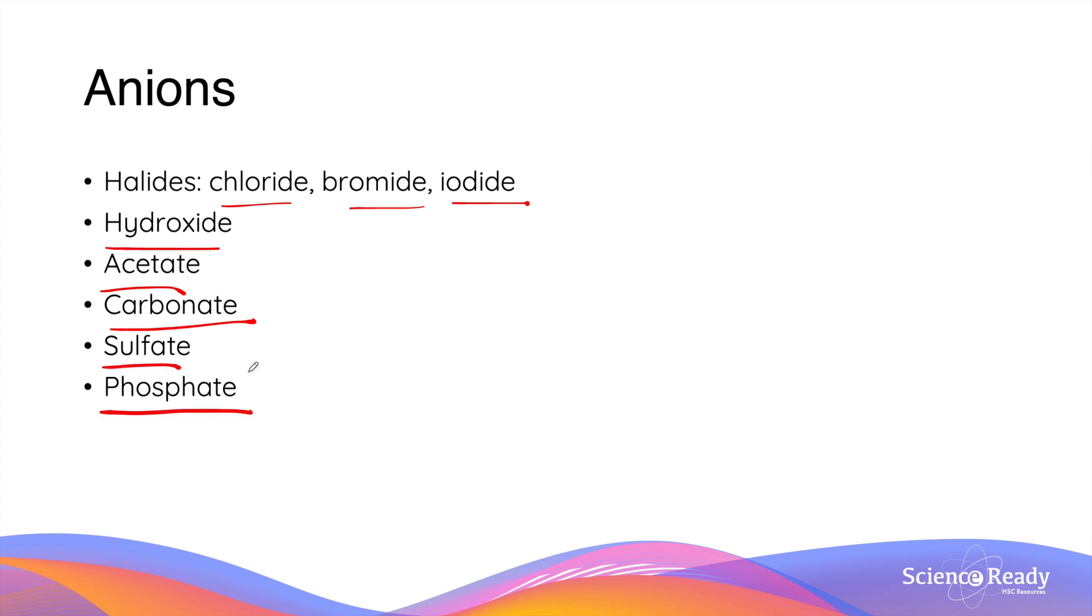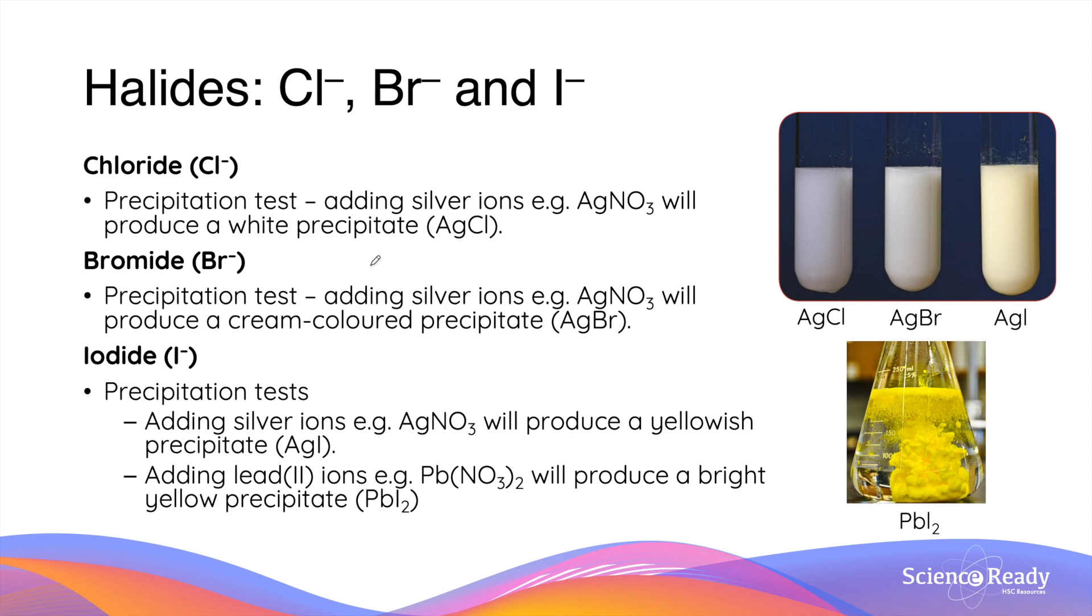We'll look at these ions individually. I've grouped the halide ions together—chloride, bromide and iodide—as they all can be identified in similar tests.